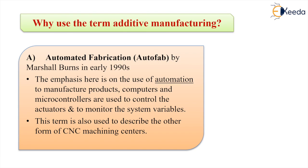Why do we use the term 'additive manufacturing'? By now we realize that AM uses additive processes combining material layer by layer, but there are many other terms used in AM. The first is Automated Fabrication, also called Auto Fab. This term was popularized by Marshall Burns in the early 1990s. The emphasis here is on the use of automation to manufacture products — computers and microcontrollers are used to control actuators and monitor system variables.